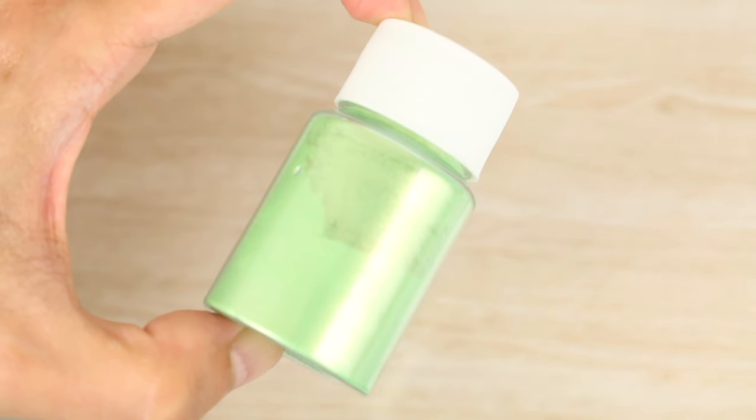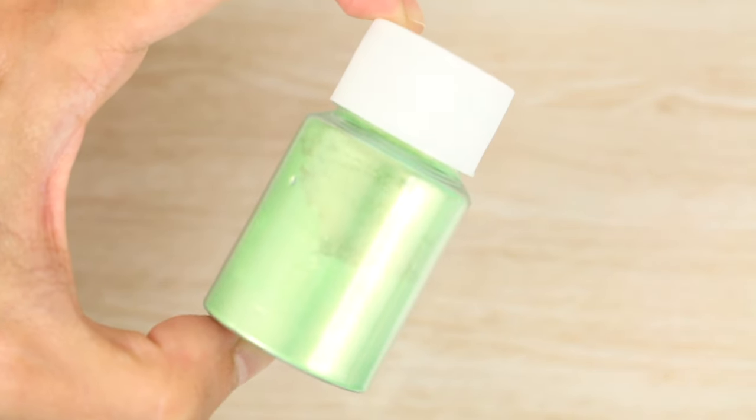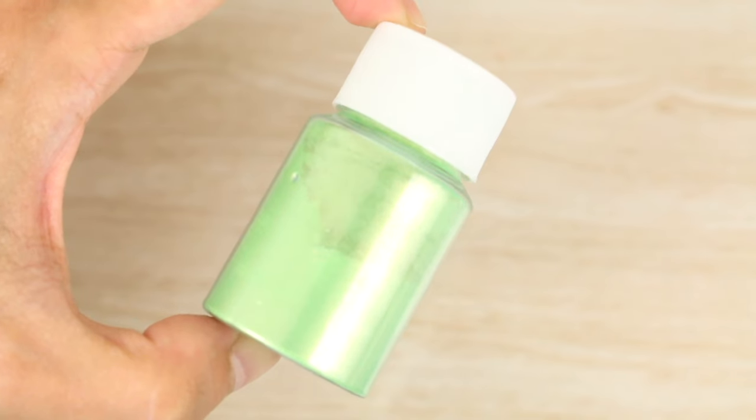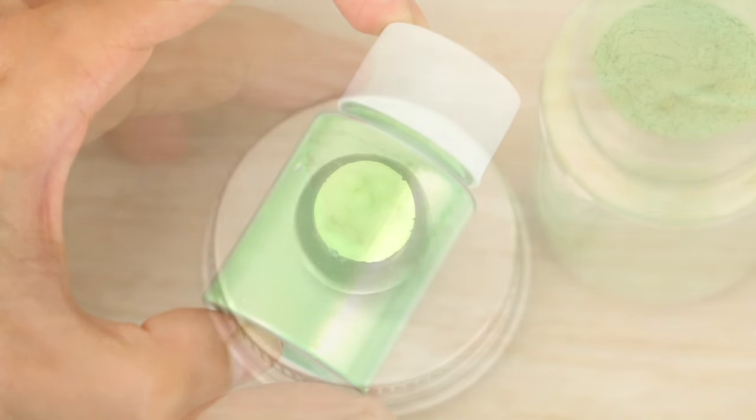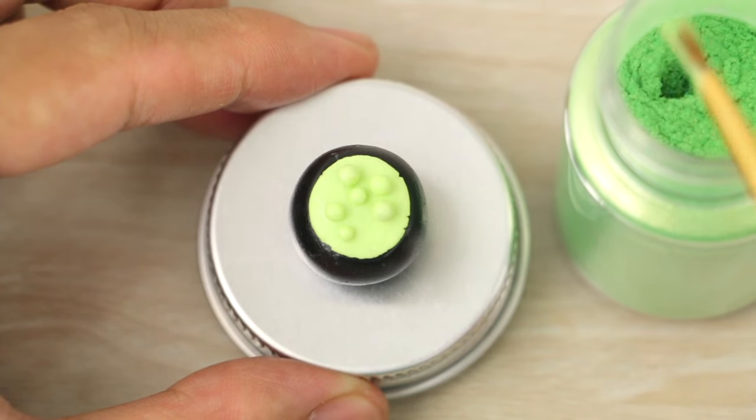I then have some green mica powder and I'm painting some onto the green clay so that it becomes nice and shimmery. If you don't have this, you could add some glitter or use a green clay with a pearl effect.